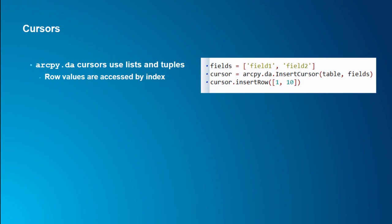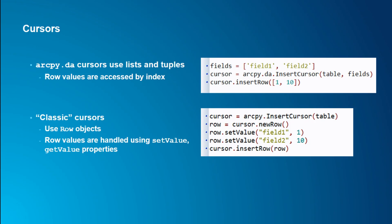The data access cursors are index-based. We pass in fields, and the values map by position — number one goes to field one, number ten goes to field two. This contrasts with the classic cursors, which had a heavy row object orientation: you create a row, stuff the values in, and pass that in. Using row objects really bogged things down. We'll focus on the data access versions.